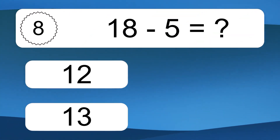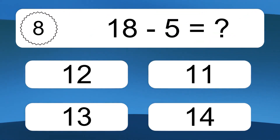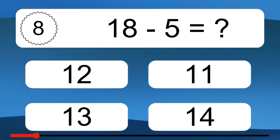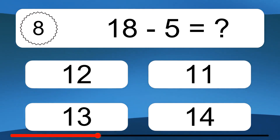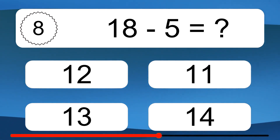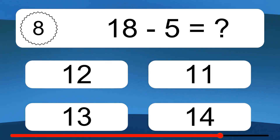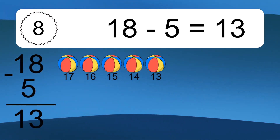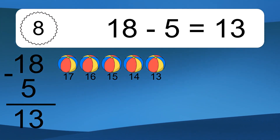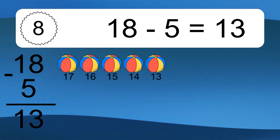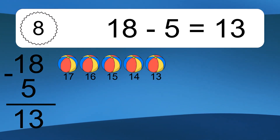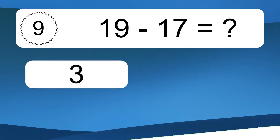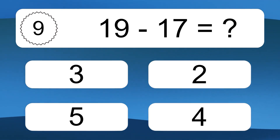18 minus 5 equals what? 18 minus 5 equals 13. Let's count it. 17, 16, 15, 14, 13.